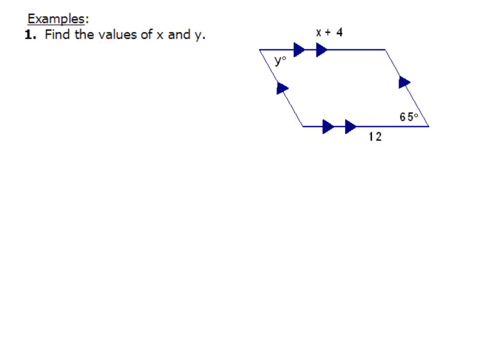Now to find the values of x and y, our diagram is already marked for us a little bit, so we can tell that it's a parallelogram because both pairs of opposite sides are parallel. Which means I'm going to first make use of these two angles right here, 65 and y. Opposite angles in a parallelogram are equal, so that means y has a value of 65.